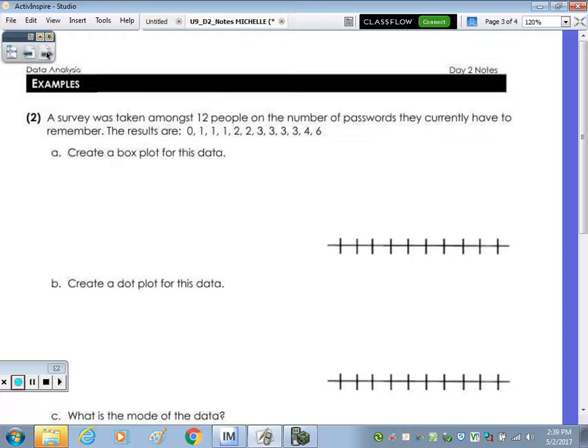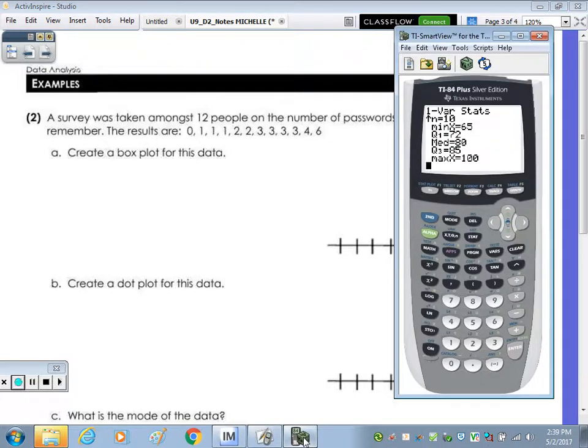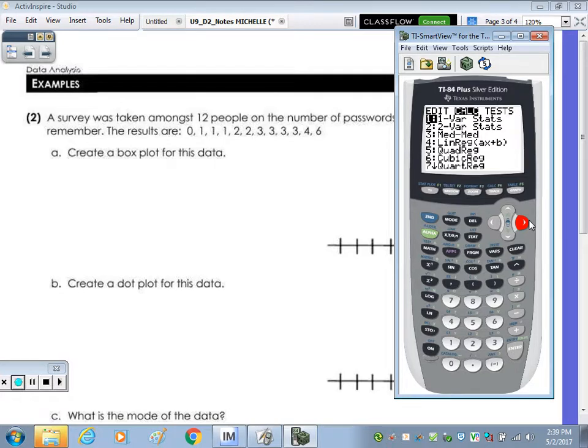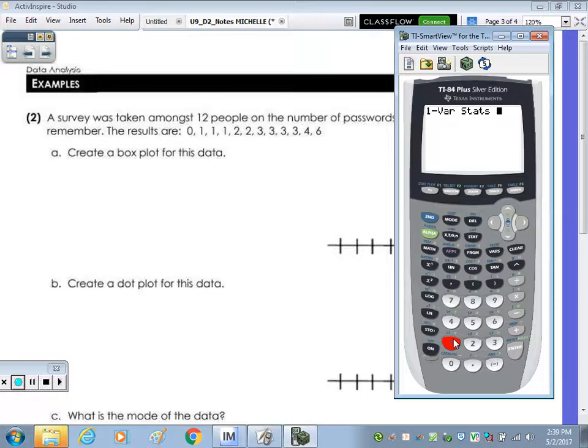So we need to type this into our calculator to get our five number summary. So stat, edit, remember to hit clear, not delete. We have a zero, three ones, two twos, four threes, a four, and a six. Stat, calc, my screen's gonna look a little bit different than yours. I just have to hit enter after this one. So Sarah, you might have the same screen that I have. You guys go down to your calculate button and actually hit calculate.